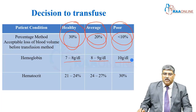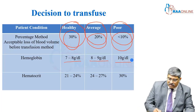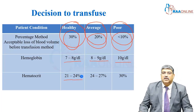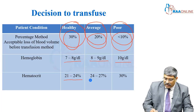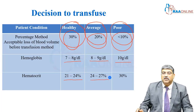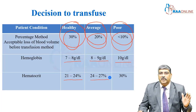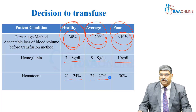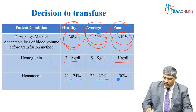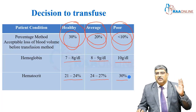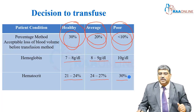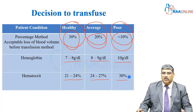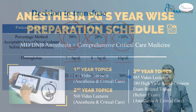With regard to hematocrit: in a healthy individual, if it is between 21 to 24%, you go for transfusion. In an average patient, if it is between 24 to 27%, you transfuse. In a poor patient, if it is less than 30%, you go for transfusion.